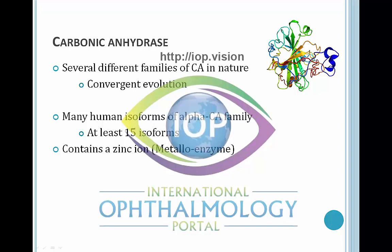Carbonic anhydrase is a very interesting enzyme. There are actually many different families of carbonic anhydrase in nature, and they are all widely different in their amino acid composition — this is thought to be one of the strong pieces of evidence for convergent evolution. The alpha carbonic anhydrase family is the principal family in humans, with at least 15 different isoforms. This particular enzyme contains a zinc ion and is an example of a metalloenzyme.